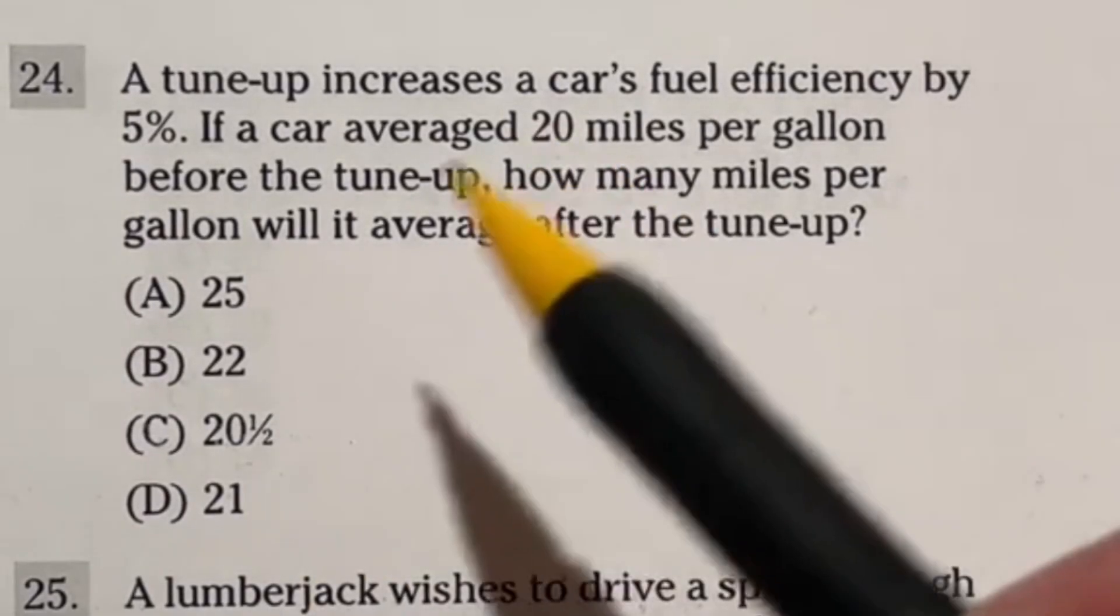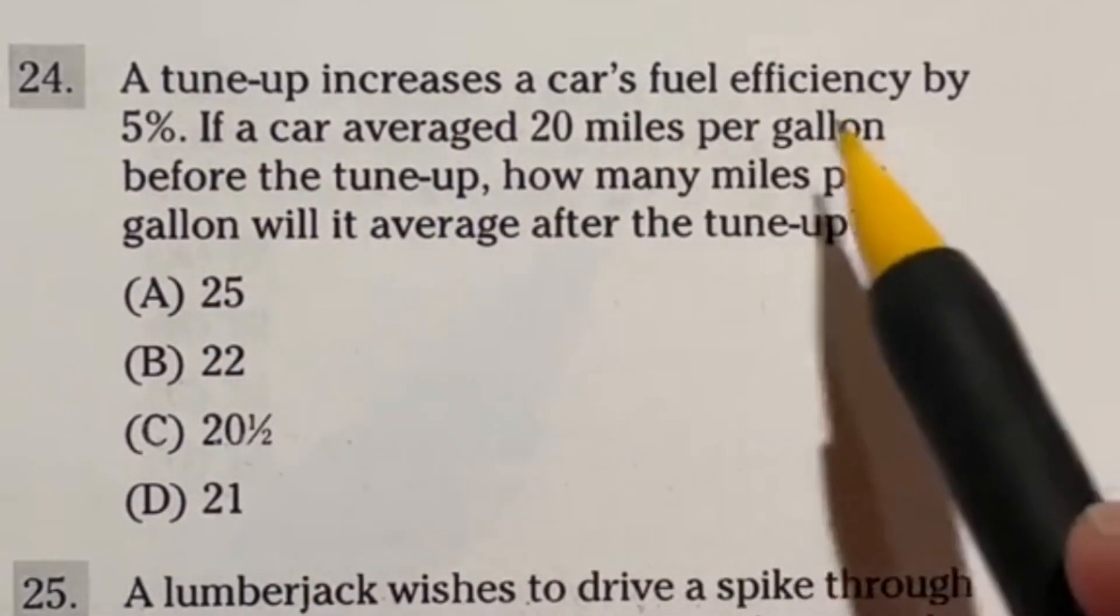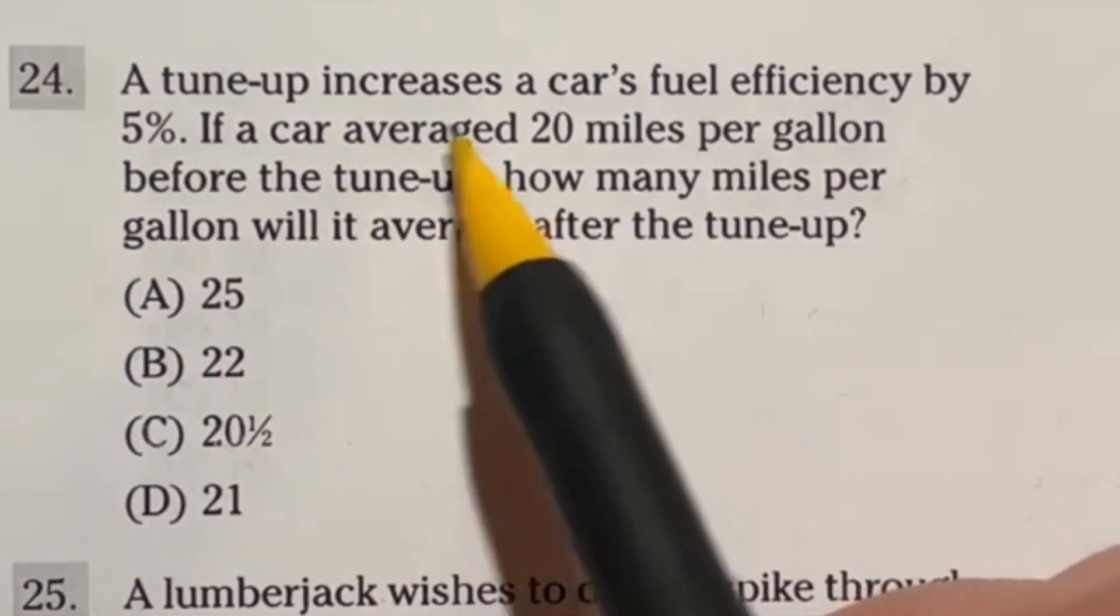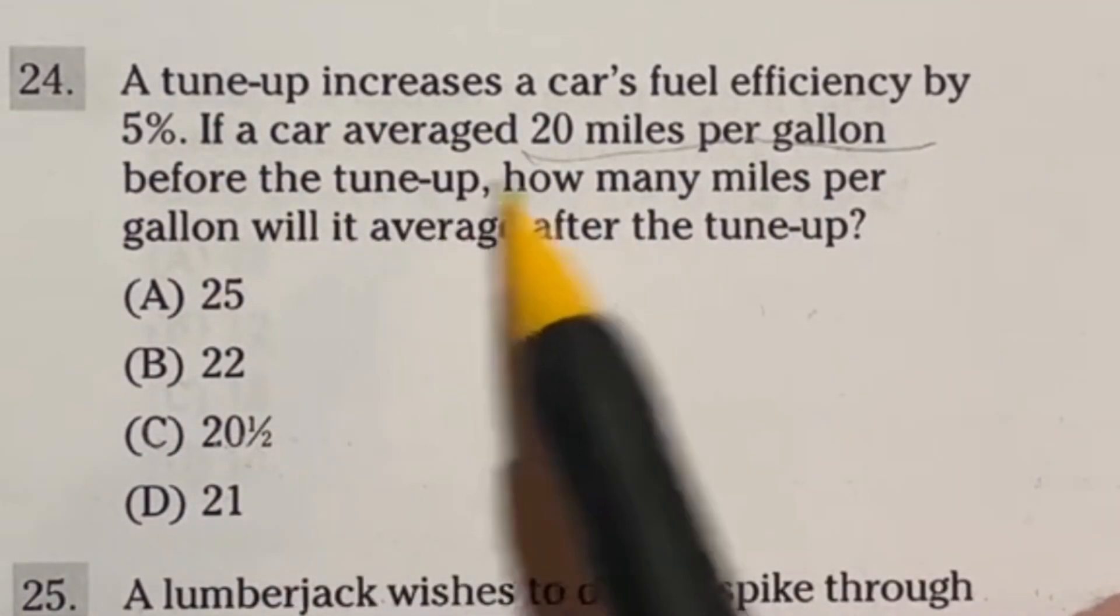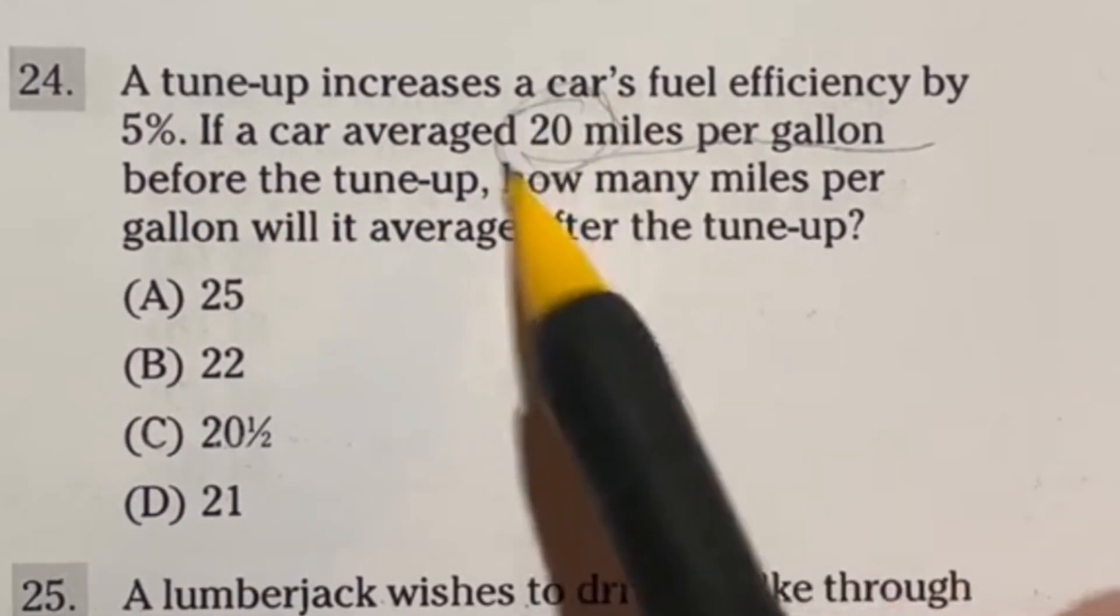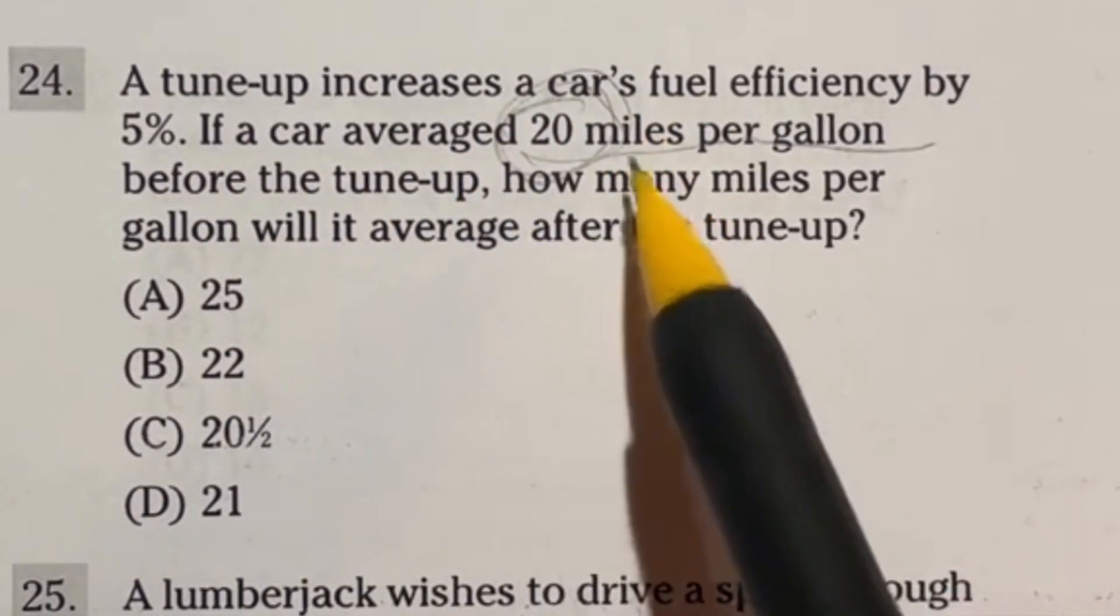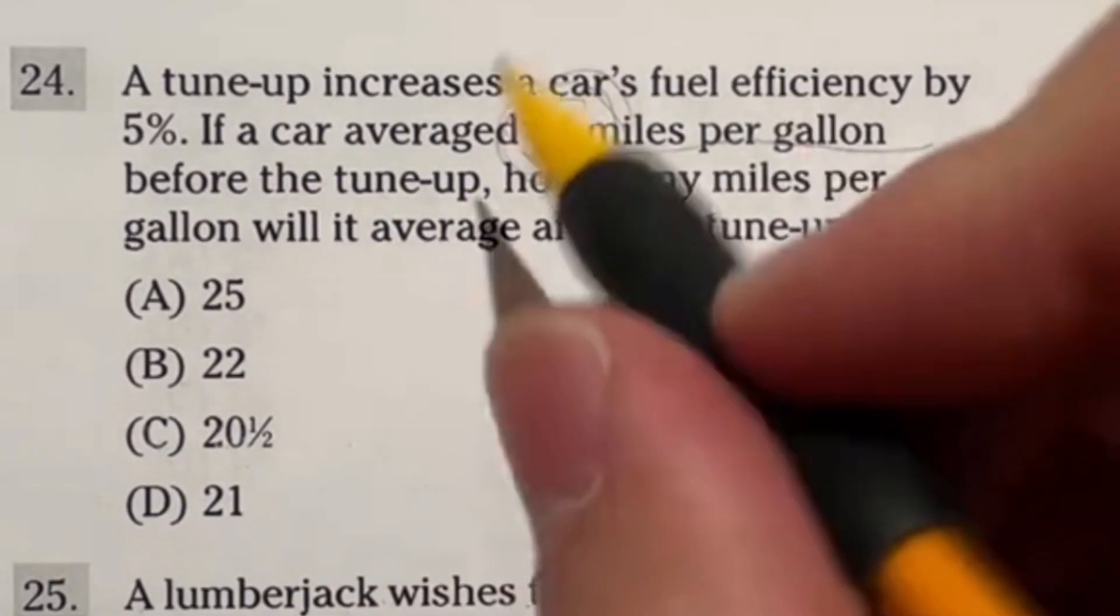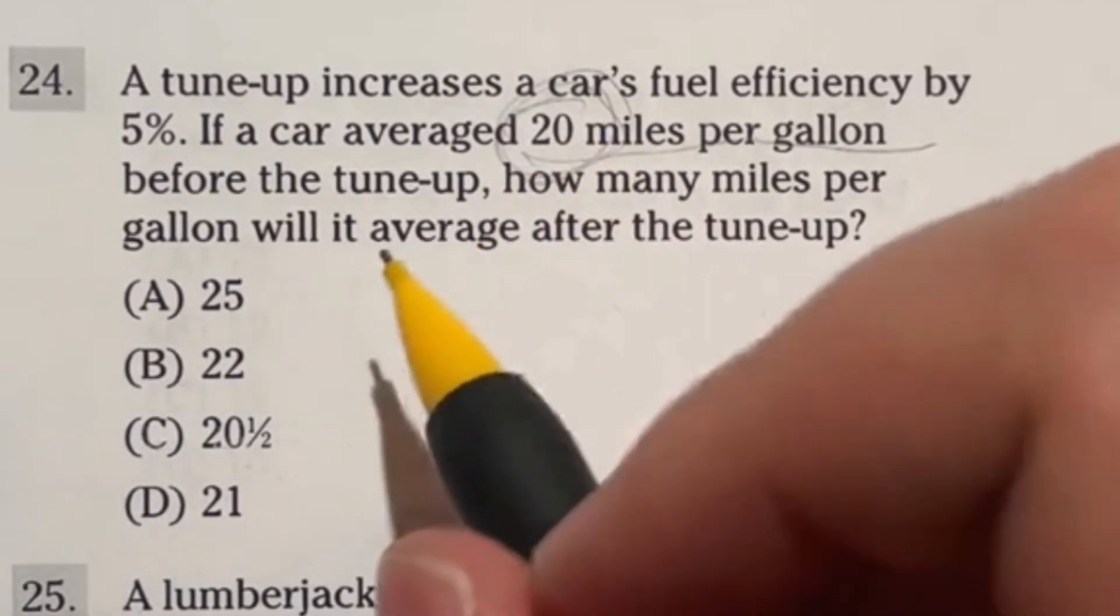All right, number 24. We're going to talk some little trick tips here. It says a tune-up increases a car's fuel efficiency by 5%. If a car averaged 20 miles per gallon before the tune-up, how many miles per gallon will it average after the tune-up? So we need to find 5% of this 20 and then we need to go ahead and add that to it to find out what our new average is going to be. Or we could find 105% of the 20 and do it that way as well.